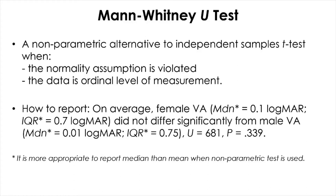Let's talk about the non-parametric alternative tests to independent samples and paired samples t-test. First, we have the Mann-Whitney U-test, which is the non-parametric alternative to the independent samples t-test. You run this test when the normality assumption is violated, or when the data in each group is at an ordinal level of measurement.